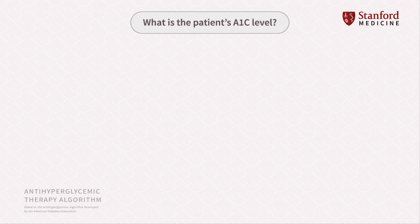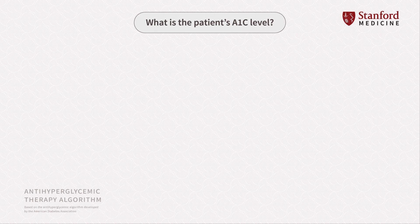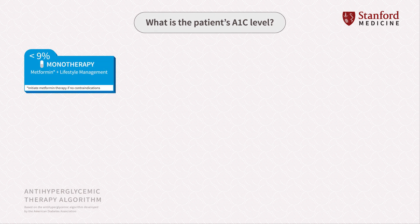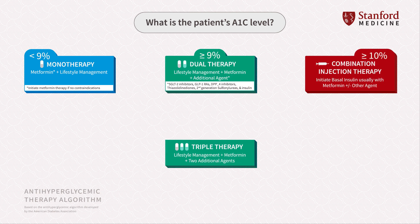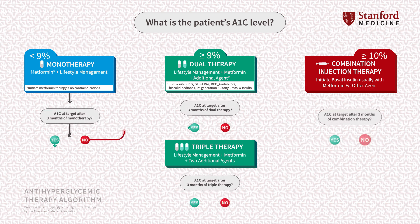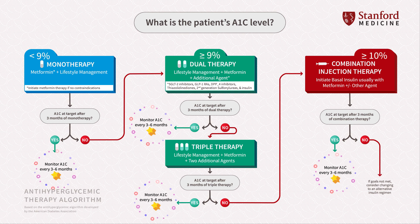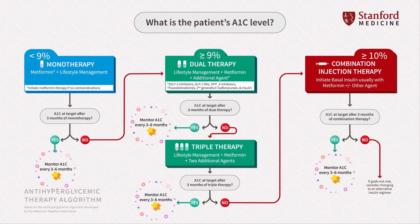The algorithm is organized by A1C results and contains four main therapy categories: monotherapy, dual therapy, triple therapy, and combination injection therapy. Each therapy offers basic information about standard drug classifications for diabetes treatment, includes lifestyle management in tandem with pharmaceutical suggestions, and each tier is designed to be re-evaluated for efficacy every three months. Your patient's treatment should be adjusted as needed based on the results of their regular evaluations.